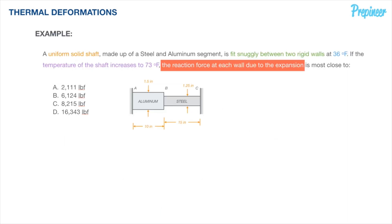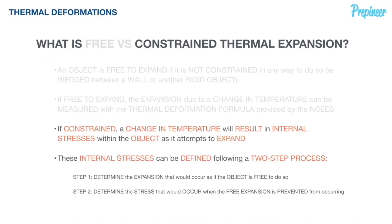Now we're dealing with a case where free expansion doesn't exist — the shaft is fit snugly between two rigid walls, so the moment it increases in length, a reaction force occurs at the ends. Because the wall is rigid, it won't move, which creates stresses. There are two types of thermal expansion: free and constrained. In this case we're dealing with constrained thermal expansion, and there's going to be a simple two-step process that we will follow.